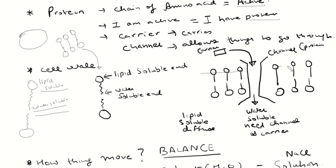This is the external part of the cell; this is the internal part. Lipid-soluble compounds pass through the cell wall because the lipid-soluble parts are on either side — they don't have an issue. Water-soluble compounds cannot, because the lipid-soluble parts on either side don't like things dissolved in water.